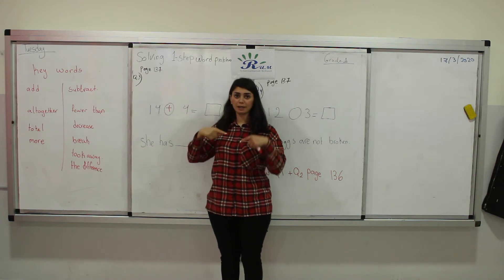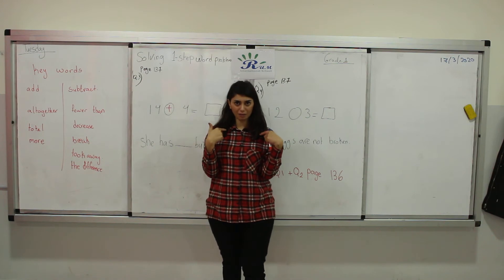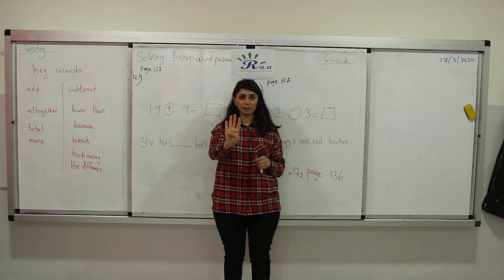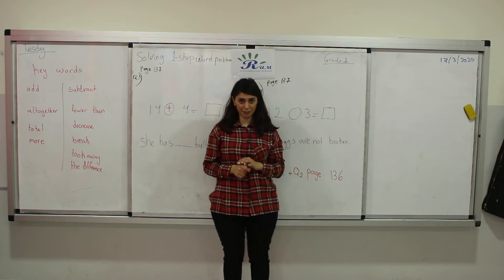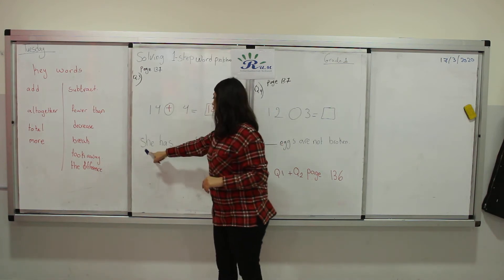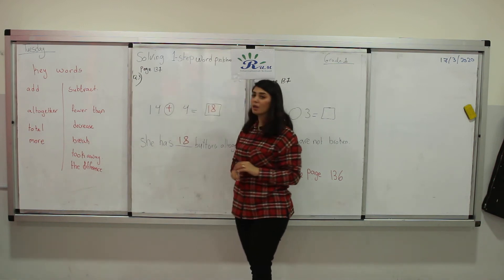Plus means counting on or back? Yes, counting on. Thank you. 14 in our head, 4 in our fingers. 14, 15, 16, 17, 18. The answer is 18. She has 18 buttons all together.